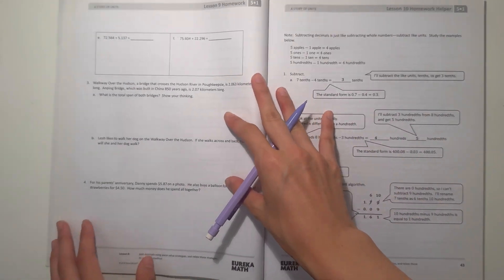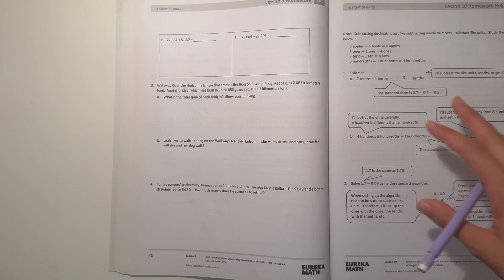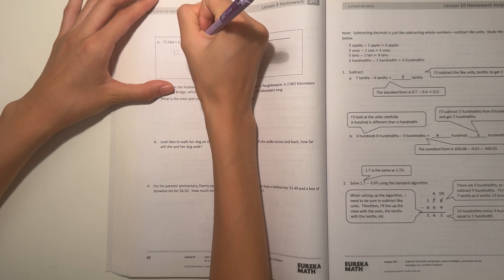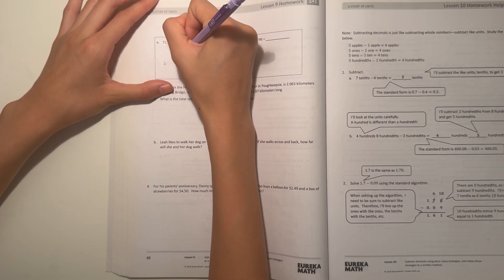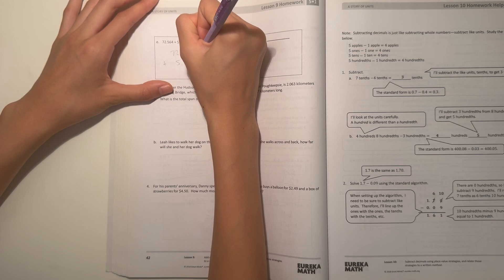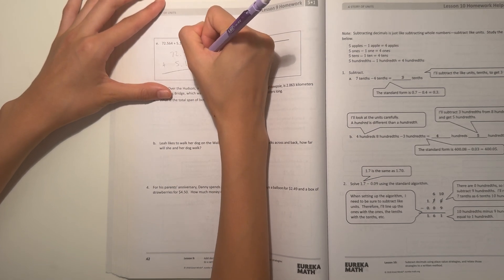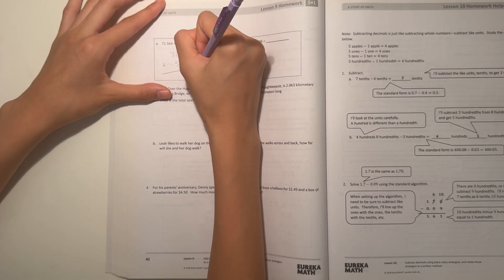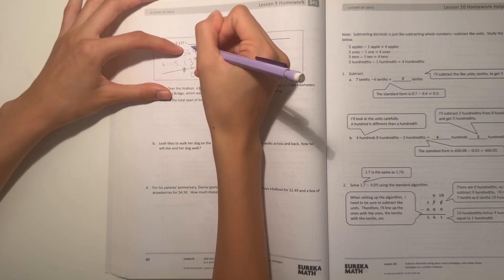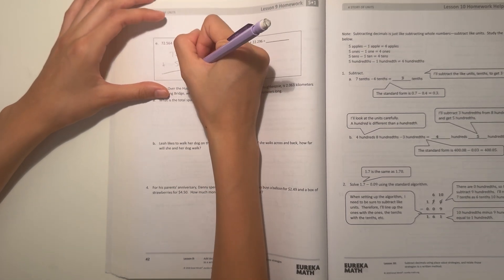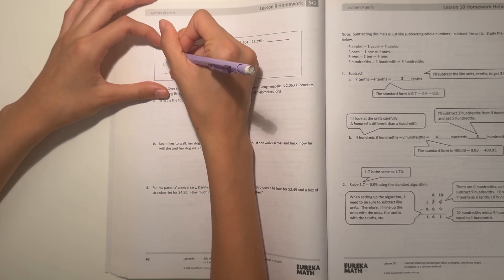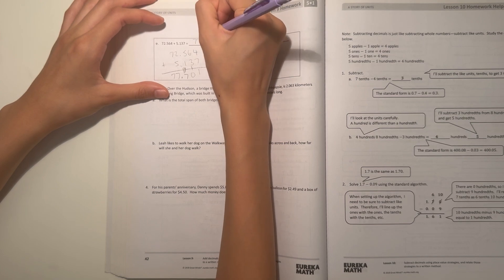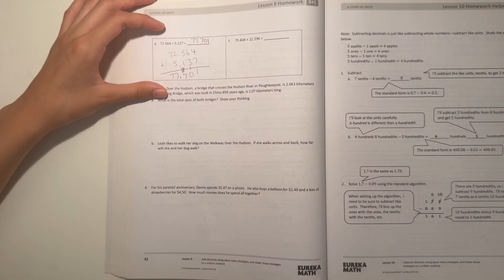Alright, next page. Alright, so E, we have 72.564 plus 5.137. 4 plus 7 is 11. 6 plus 3 is 9 plus 1 is 10. 5 plus 1 is 6 plus 1 is 7. 2 plus 5 is 7. And 7 would just be 7. And move the decimal point down. Our answer is 77.701.